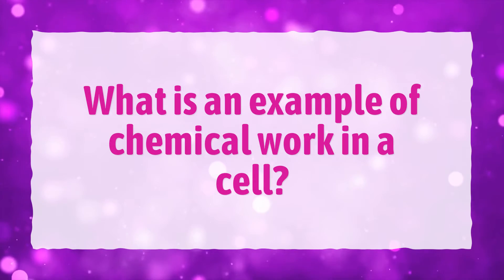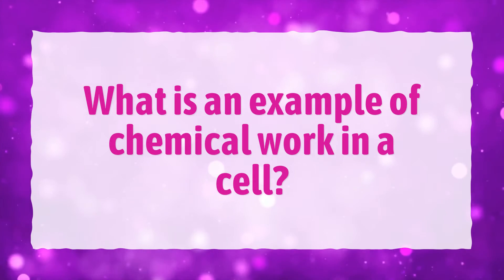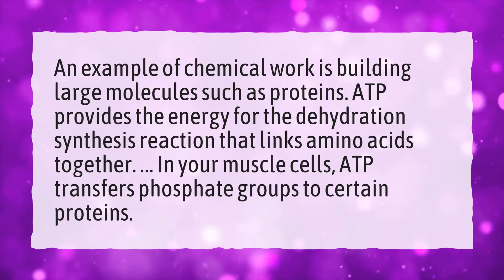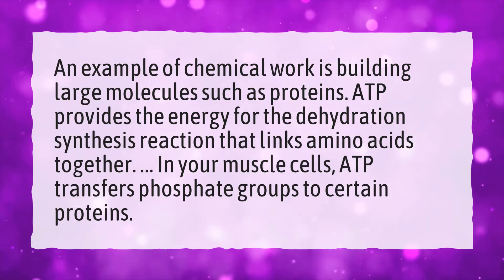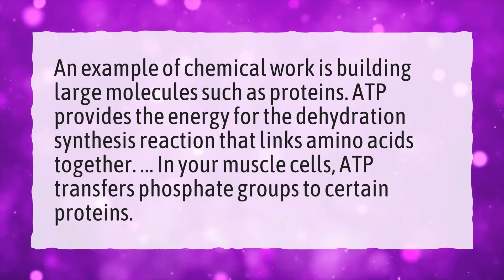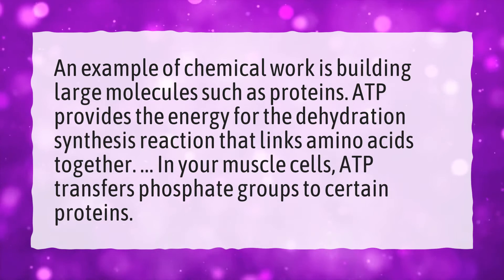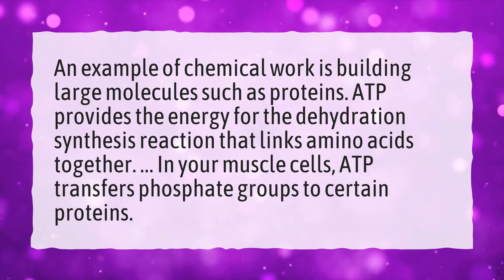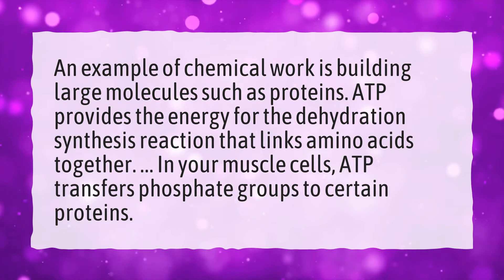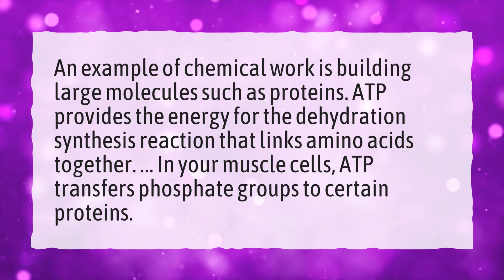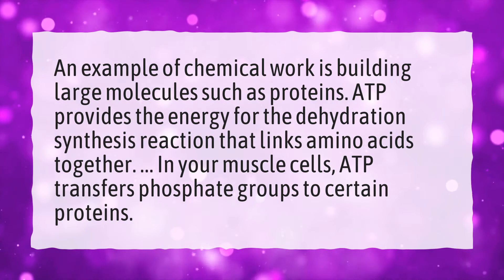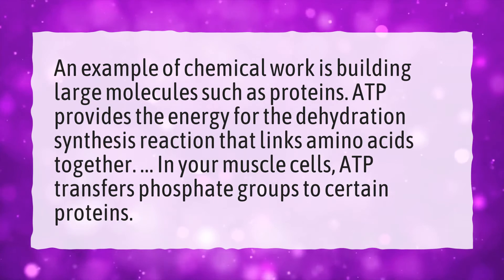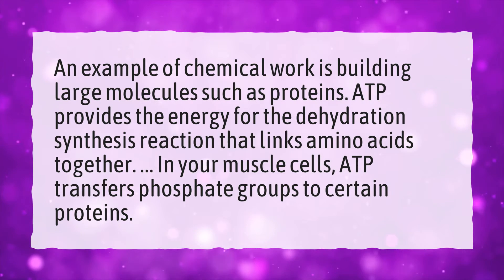What is an example of chemical work in a cell? An example of chemical work is building large molecules such as proteins. ATP provides the energy for the dehydration synthesis reaction that links amino acids together. In your muscle cells, ATP transfers phosphate groups to certain proteins.